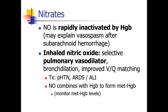Nitric oxide is rapidly inactivated by hemoglobin, which may explain, incidentally, why patients who have a subarachnoid hemorrhage are at increased risk for cerebral vasospasm — because of all the hemoglobin floating around from the bleed, scavenging up all the nitric oxide.